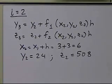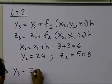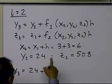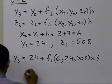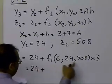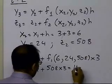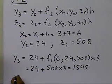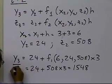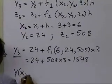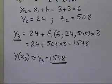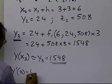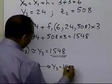Now we find y3 and z3. y3 equals y2, which is 24, plus f1(x2=6, y2=24, z2=508) times h=3. Since f1 is nothing but z, which is 508, times 3, that gives 1524, and 24 plus 1524 gives y3 equal to 1548. We don't need to calculate z3 since all we need is y3. So the value of y at x3 is approximately y3 equal to 1548.